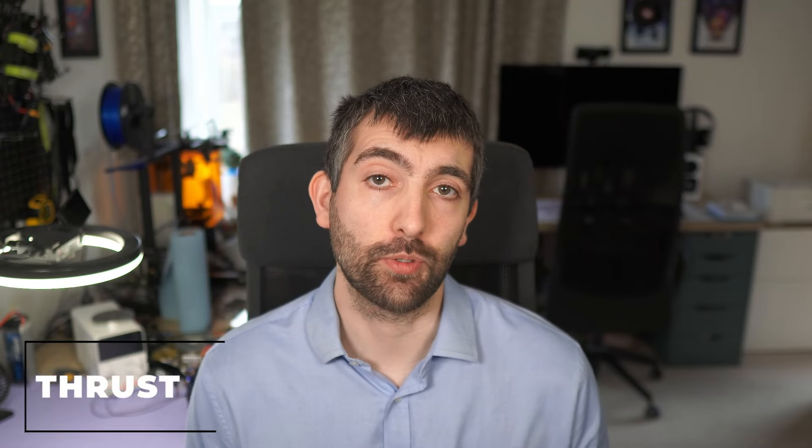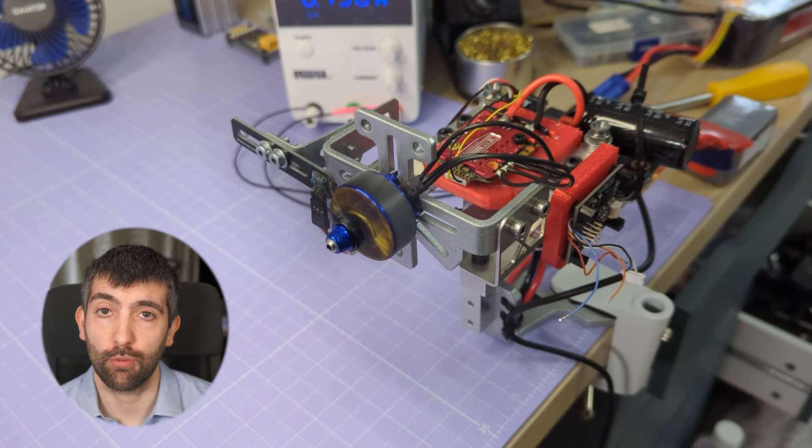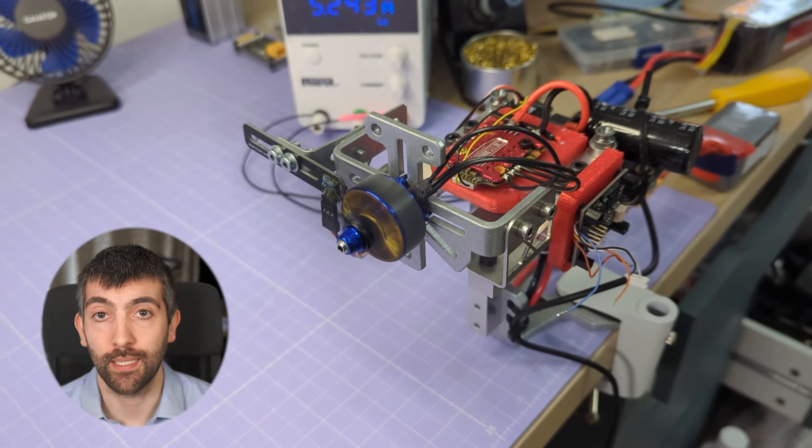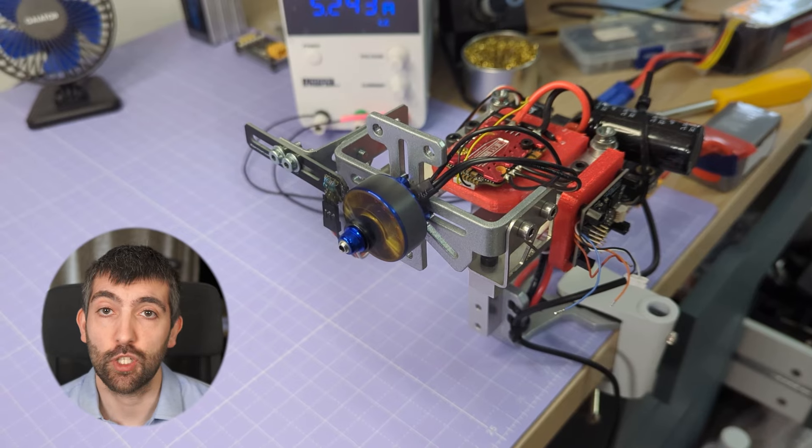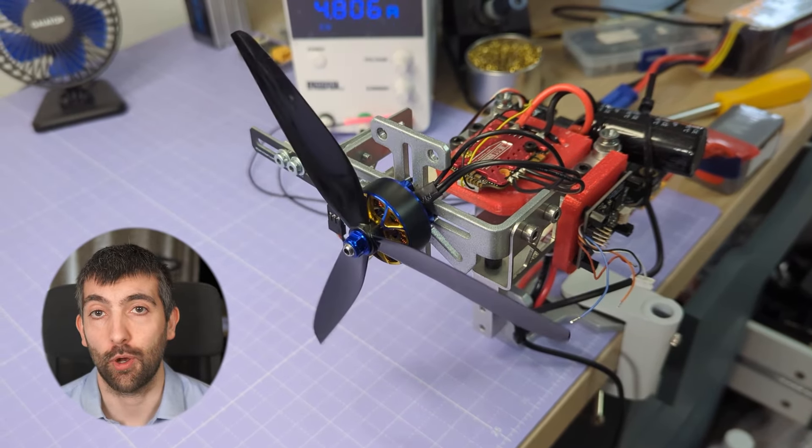Now let's look at the thrust, power, and efficiency of the motor, and I measure this using a throttle ramp from 0 to 100% throttle powered from a 6s battery kept topped up to 24 volts by a power supply. My standard test prop for 7 inch motors is the HQ 7x3.5x3 V1S prop.